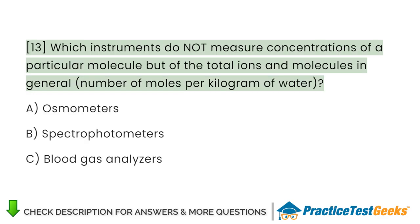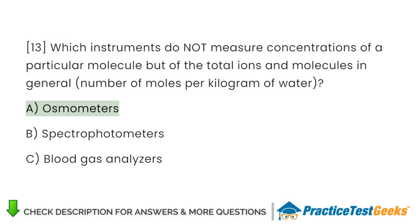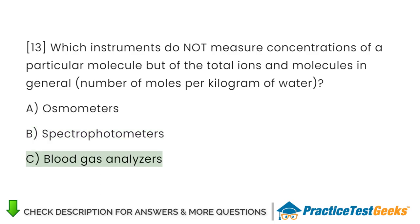Which instruments do not measure concentrations of a particular molecule but of the total ions and molecules in general — number of moles per kilogram of water? A. Osmometers. B. Spectrophotometers. C. Blood gas analyzers.